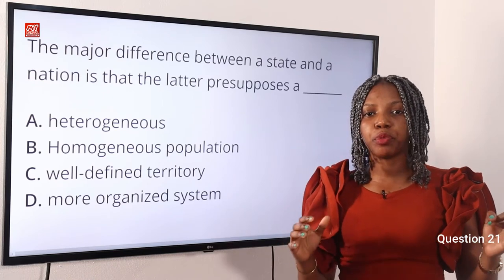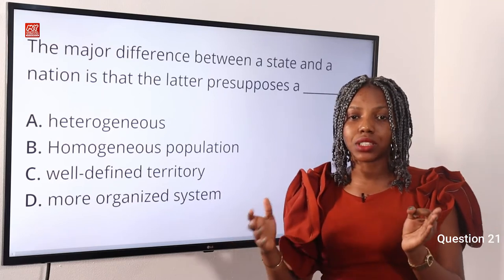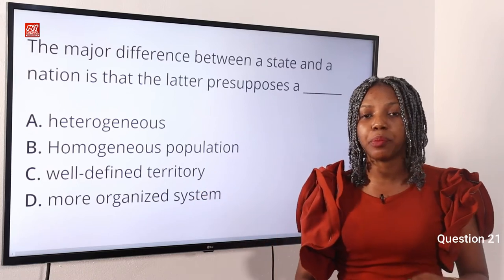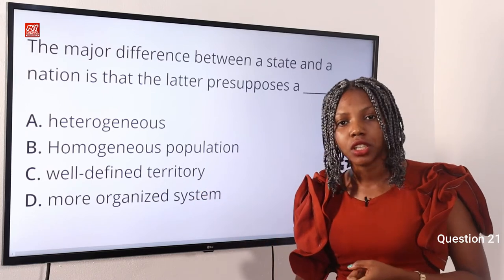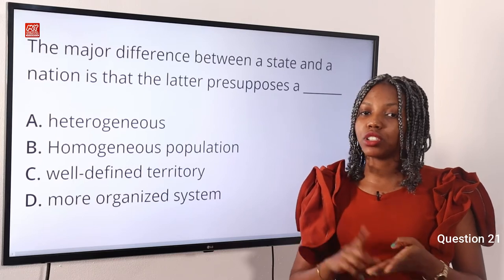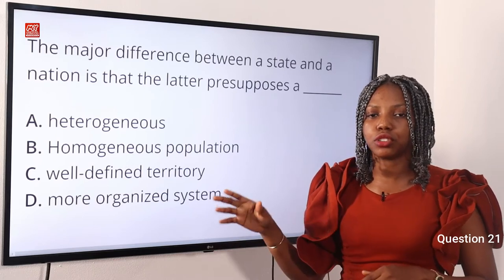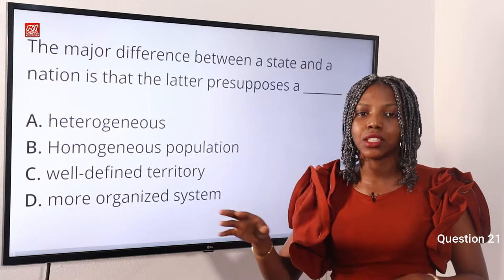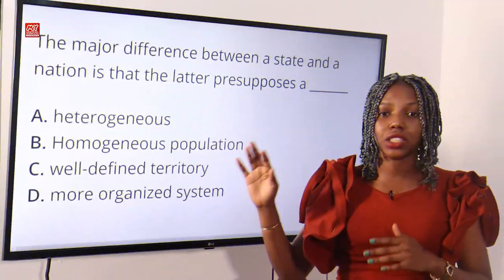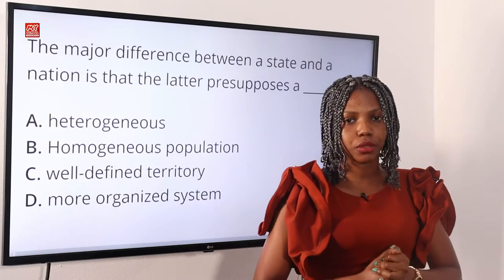These are people with the same mind or the same cultural background. When we talk about heterogeneous, we're looking at population, territory, government, and sovereignty — those are the four elements peculiar to a state, and it is of diverse culture, heterogeneous in nature. Option B is the correct answer to this question.